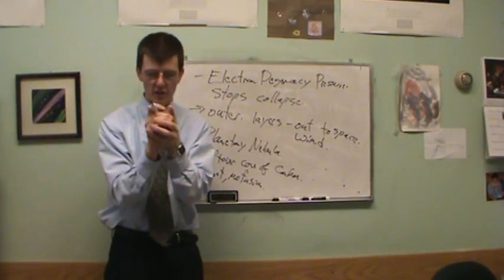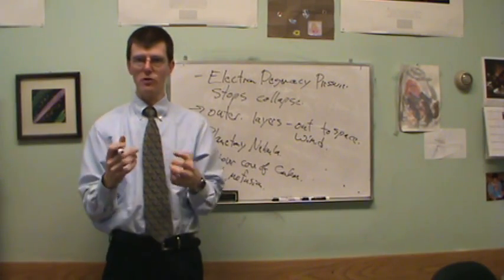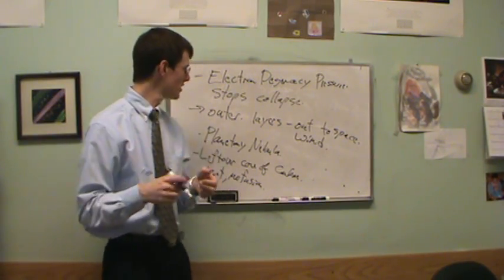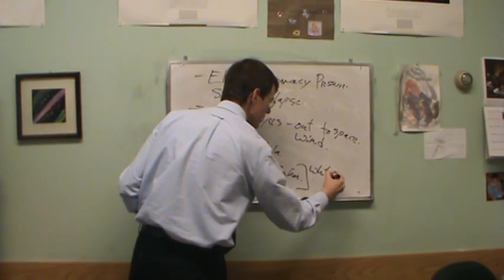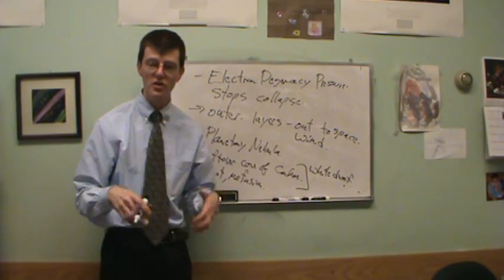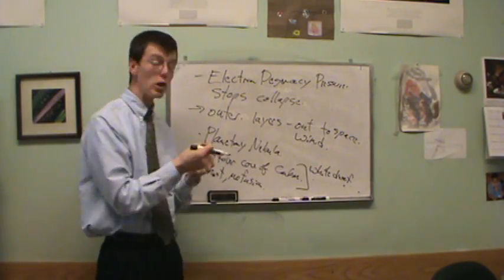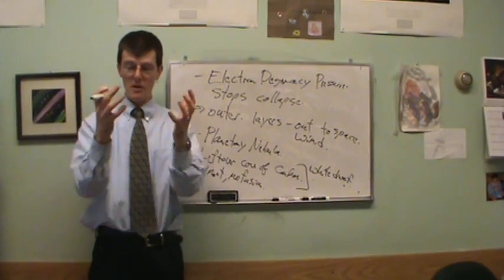And so we call this thing once, once you build up this leftover core of the star, it's about the size of the earth, even though it's a substantial fraction of the mass of the sun. And we call these, and we see these things, this leftover core of carbon. This is called the white dwarf, white dwarf. And we see these, we see white dwarf stars. They're the leftover cores of low mass stars that are held up by electron degeneracy pressure and they're there and that's it.